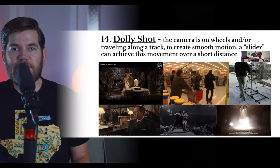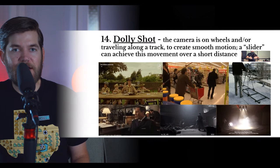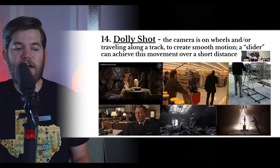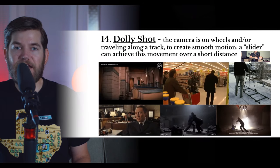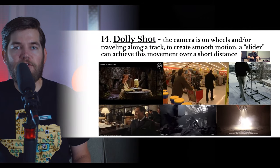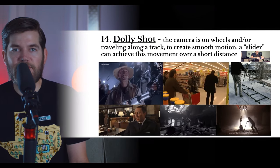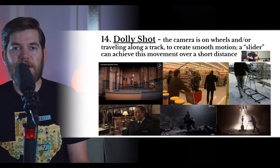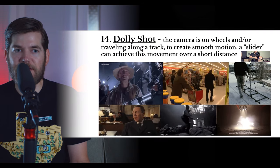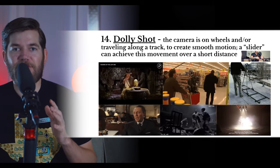Next up we have the Dolly shot — one of, if not the most, smooth camera movements. A Dolly shot is achieved on wheels or on a track. The camera travels along a track to create smooth motion. A slider can achieve this over a short distance, and a Dolly track can achieve it over any distance as long as you have enough track. Dolly tracks can be straight or curved, and Dolly shots are great for achieving smooth push-ins, pull-aways, or lateral tracking shots.